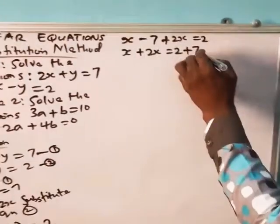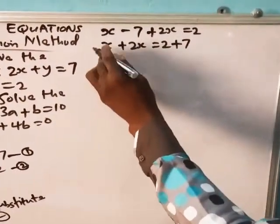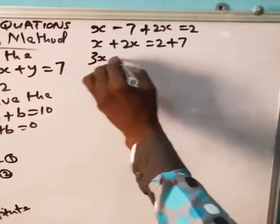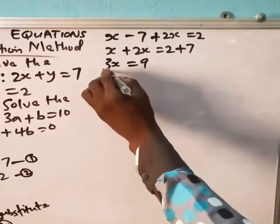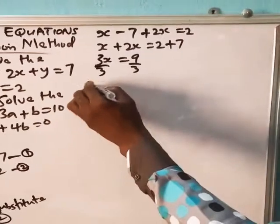x plus 2x will give you 3x, which is equal to 9. The variable side by 3. So x is 3.